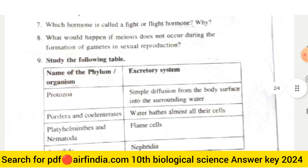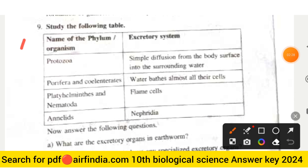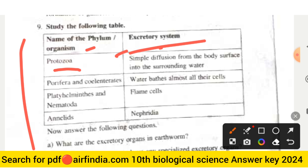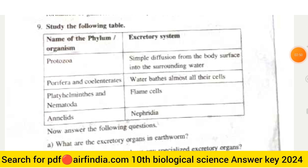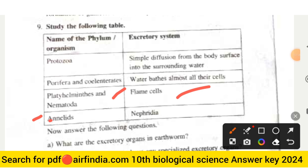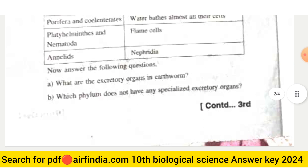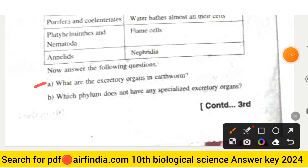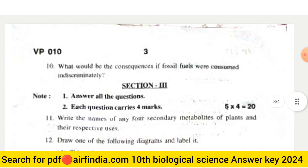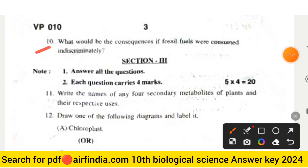Question nine asks you to study a table listing organisms and their excretory systems. Protozoa use simple diffusion from the body surface into surrounding water. Porifera and Coelenterata bathe almost all their cells in water. Platyhelminthes and Nematoda use flame cells, and Annelida uses nephridia. The sub-questions are: (a) What are the excretory organs in earthworm? (b) Which phylum does not have any specialized excretory organs?